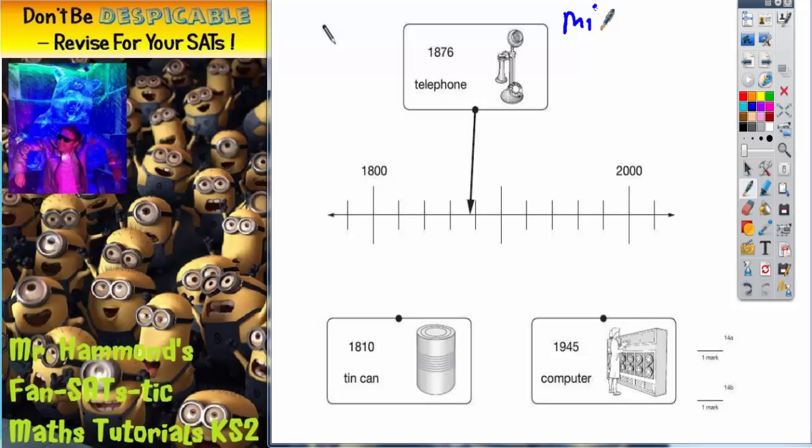Any time we've got a scale we need to figure out what each mini-gap on the scale is worth. So to do that, if we try and figure out any other key points on the scale, that will help us. So if this is 1800 and this is the year 2000, in between that would be the year 1900.